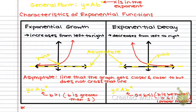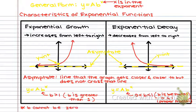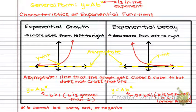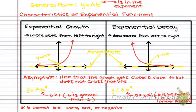No matter whether it's exponential growth or exponential decay, b cannot be zero, one, or negative. Take your calculator, substitute zero in for b and see what happens, substitute one in for b and see what happens, and substitute a negative number in for b — you'll see that the graph does not look like an exponential function.